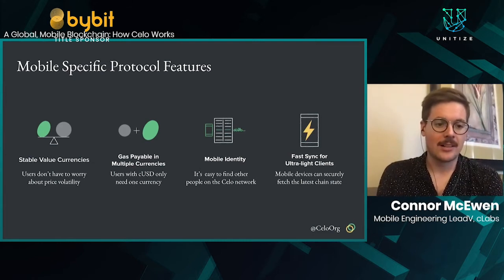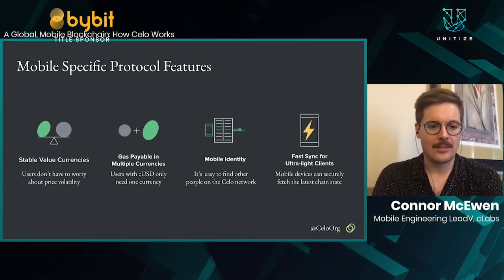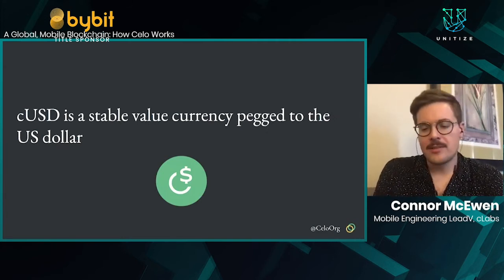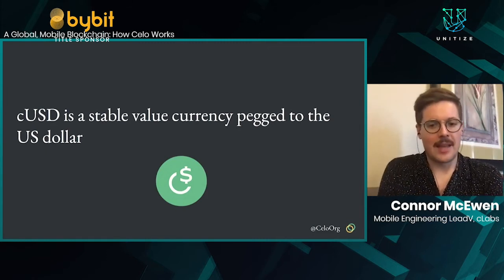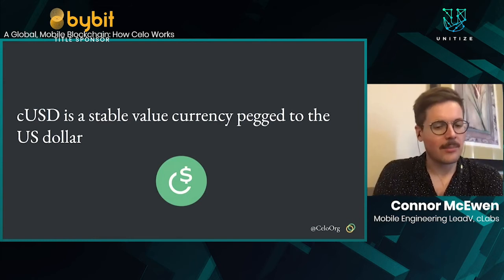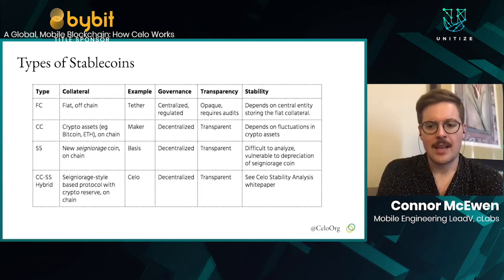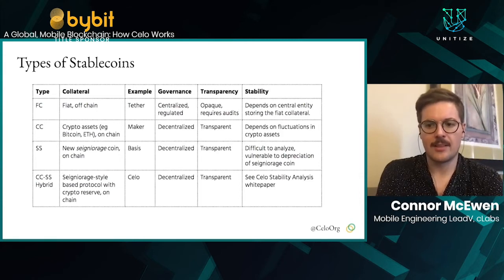With the launch of the Celo dollar, the Celo protocol allows for multiple stable value currencies. We think this is really important for usability so that users don't have to worry about price volatility. We also allow users to pay for gas in multiple currencies, simplifying the experience. We have a lightweight mobile identity protocol that makes it easy to find other people on the network to send and receive money. And the last piece is the ability to sync quickly to the network in a trustless way using our ultralight client, so mobile devices can participate without relying on a centralized hosted service.